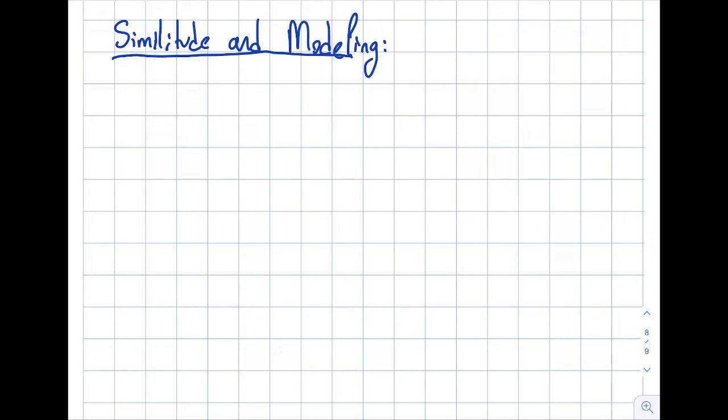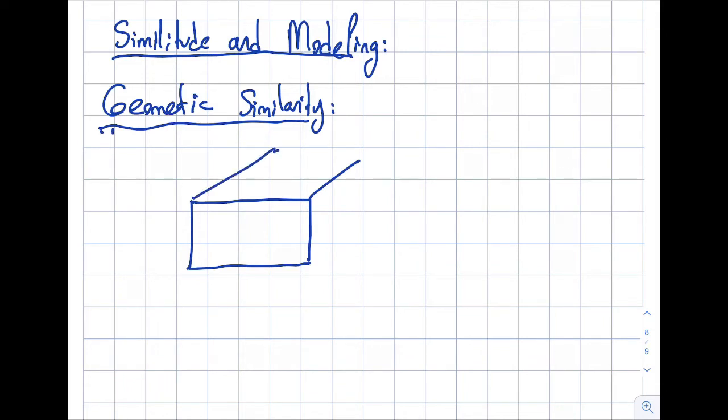Let me go ahead and write the first one. The first one is the geometric similarity. In the geometric similarity, as the name maybe recommends, the geometries of the model and the prototype should be similar. So what I mean by this is, let's say that I have a box that I'm testing, for just the sake of having some conversation here.